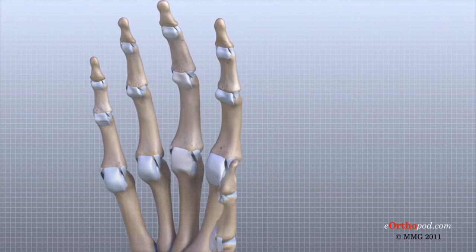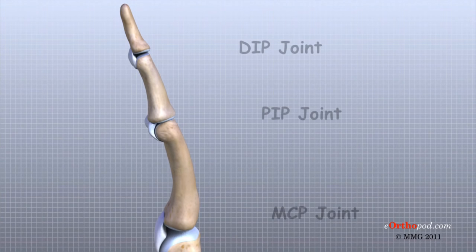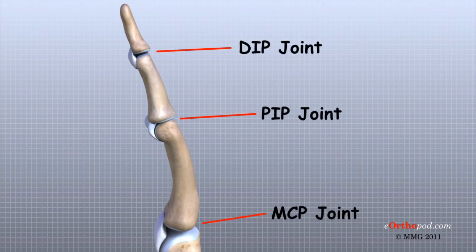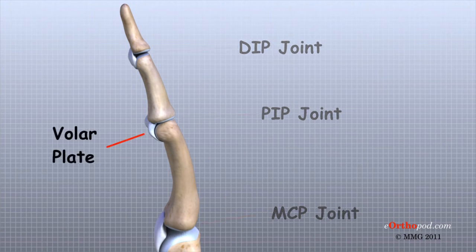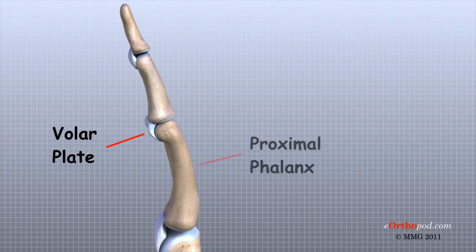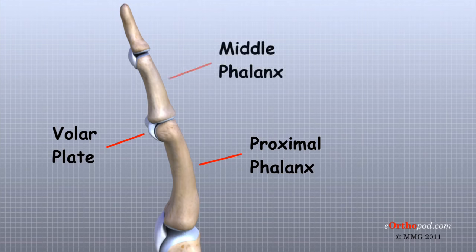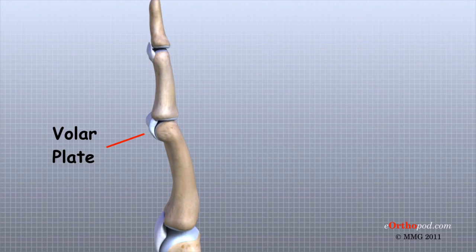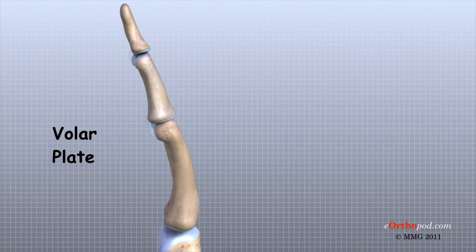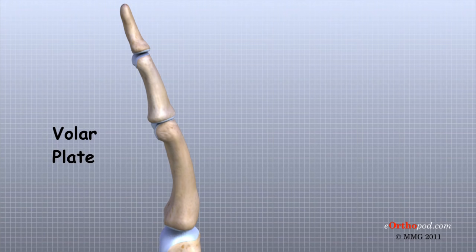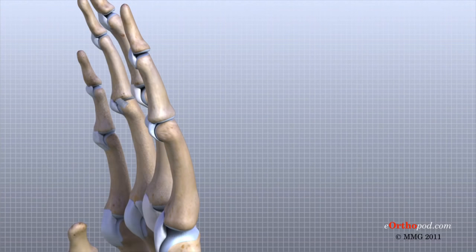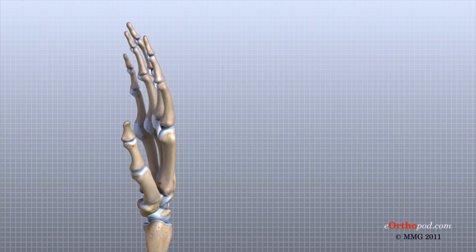In the PIP joint, the middle joint between the main knuckle and the DIP joint, the strongest ligament is the volar plate. This ligament connects the proximal phalanx to the middle phalanx on the palmar side of the joint. The ligament tightens as the joint is straightened and keeps the PIP joint from bending back too far or hyperextending. Finger deformities can occur when the volar plate loosens from disease or injury.